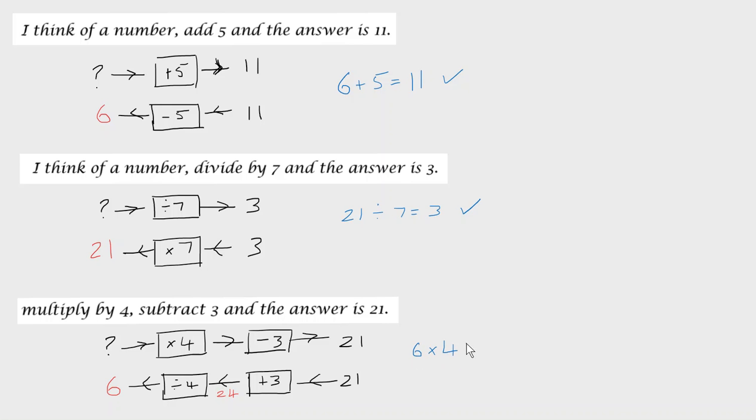Let's just check that works. 6 times 4 is 24. 24 subtract 3 is 21, which is indeed what we were meant to get. So we can give ourselves a tick there and that's correct.